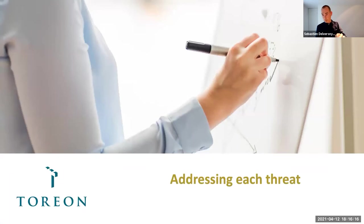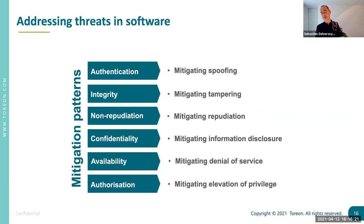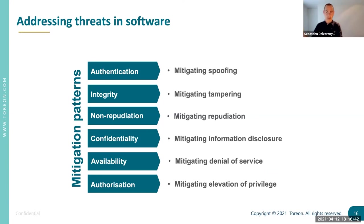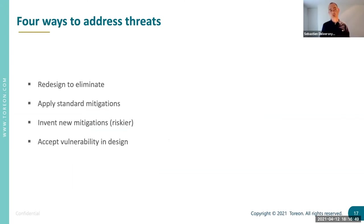Once you have identified threats, you want to address them. STRIDE is helpful here because there are standard mitigation patterns: authentication, integrity checks, non-repudiation (like signing), confidentiality (encrypting), availability, and authorization. These six mitigation categories protect against the STRIDE threats, and they are the kinds of controls you will consider designing into your solution. There are really four ways to act upon identified threats: redesign to eliminate threats, apply standard mitigations (the preferred approach), invent new mitigations if necessary, or accept vulnerabilities and deal with them later.